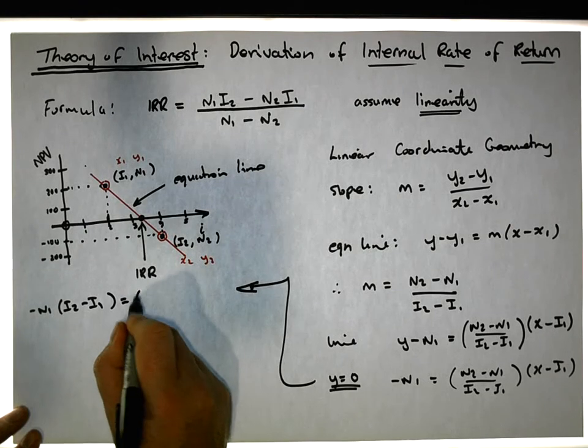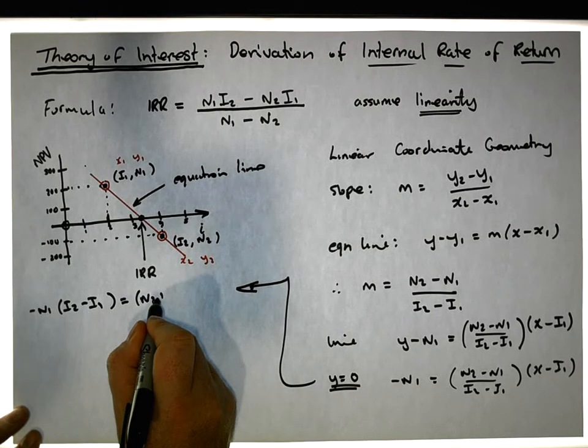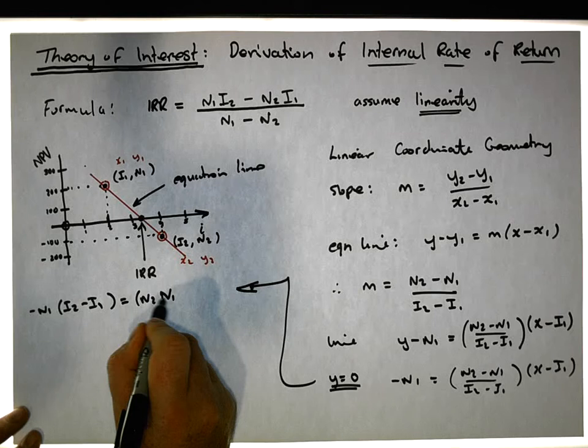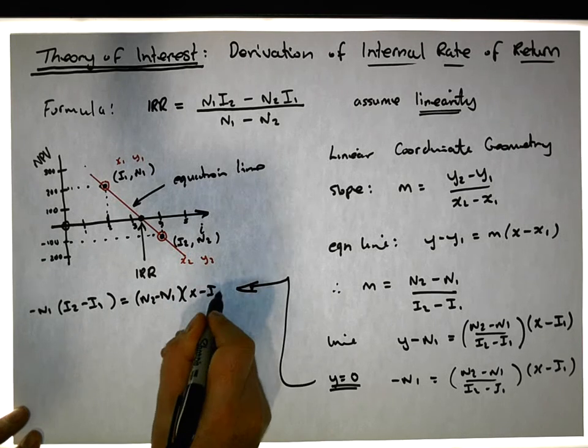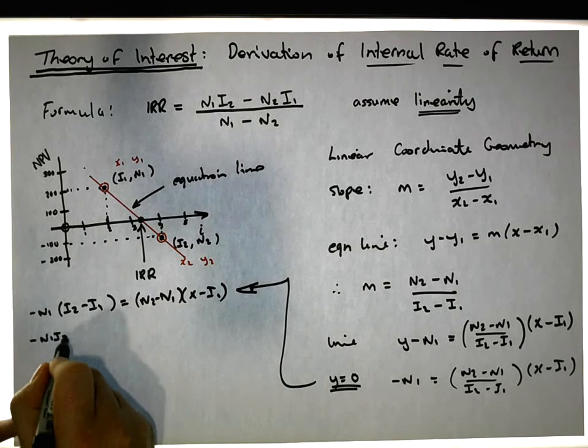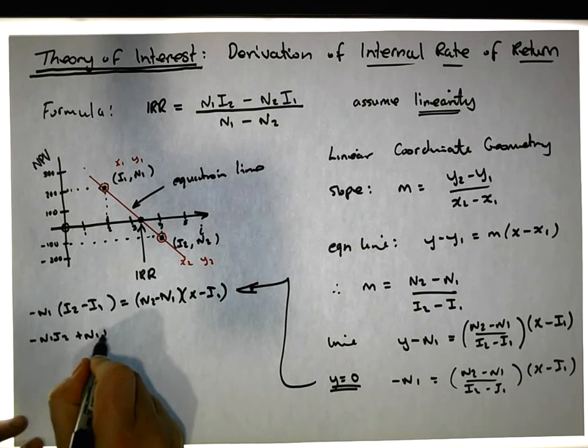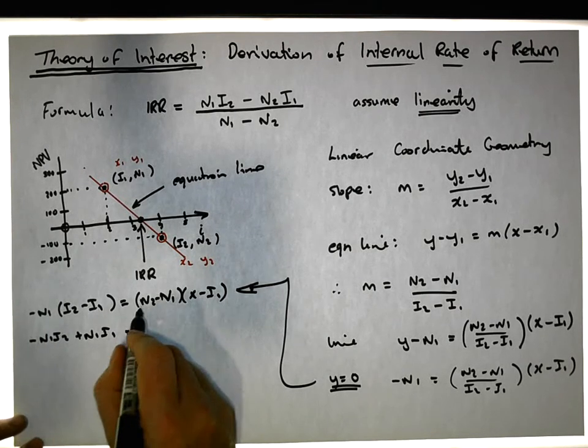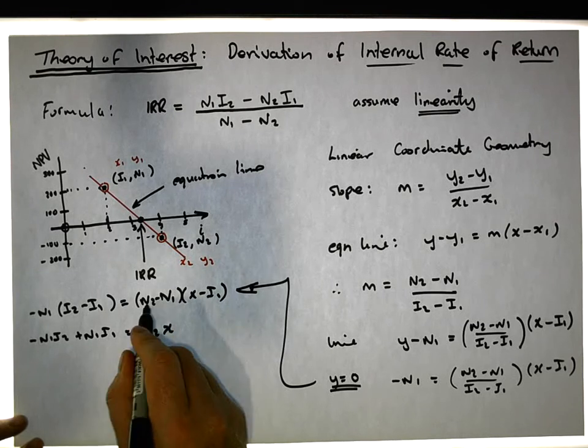Multiply now all the brackets. We end up with minus n1 i2 plus n1 i1 is equal to, in this case here, n2 x, and then we have minus n2 i1.